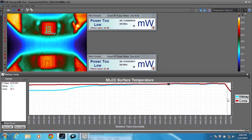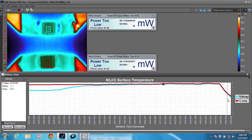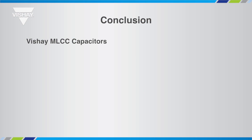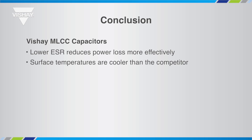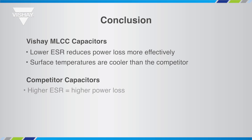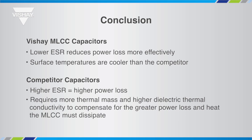This concludes our power demonstration. In conclusion, Vishay's lower ESR reduces power loss more effectively. Thermal imaging shows Vishay's MLCC surface temperature is cooler than the competitor's. The competitor's higher ESR means higher power loss, and their MLCC requires larger thermal mass and higher dielectric thermal conductivity to compensate for the greater power loss and heat that the MLCC must dissipate. Thank you.